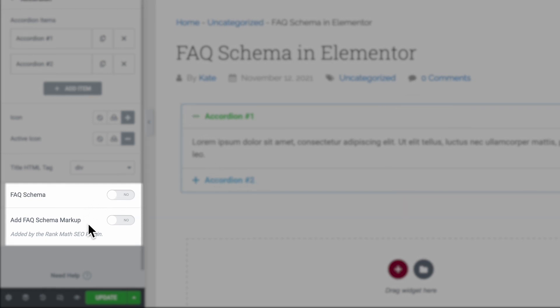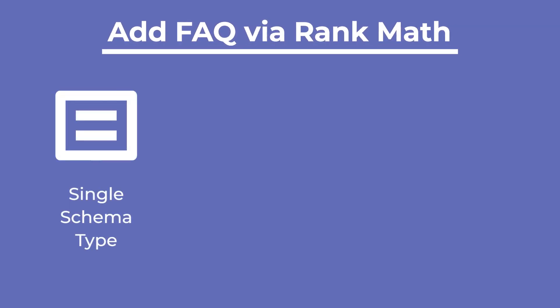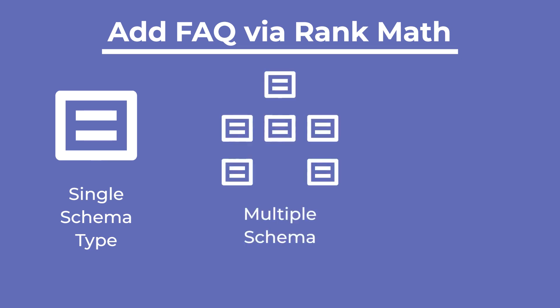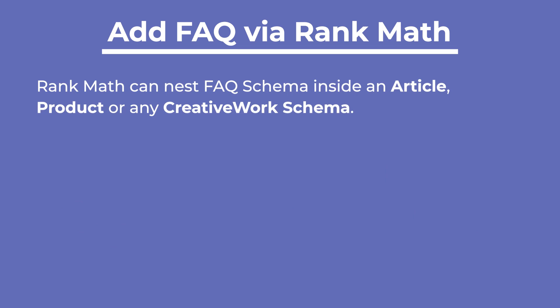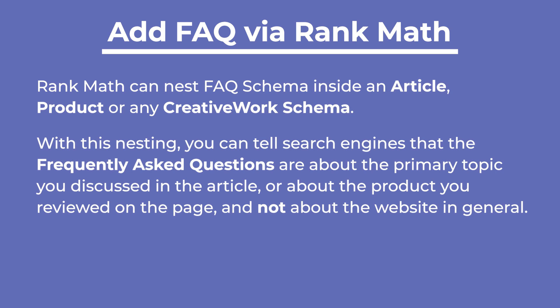However, when you add it to Rank Math, the FAQ schema will be nested. When Google started using structured data in searches, pages usually had just one type of schema. Nowadays, it's fairly common for a single page to have two, three, or even more schema types. So, to understand what is the main function of a page, Google started supporting nested schema, creating a hierarchy of schema on the page. Rank Math can nest FAQ schema inside an article or product, or any creative work schema. With this nesting, you can tell search engines that the frequently asked questions are about the primary topic you discussed in the article, or about the product you reviewed on the page, and not about the website in general.